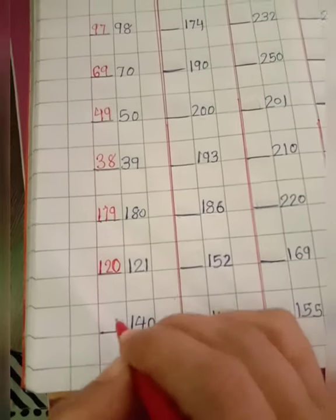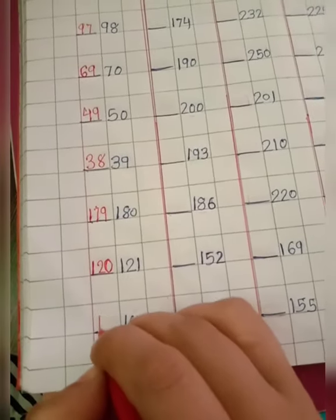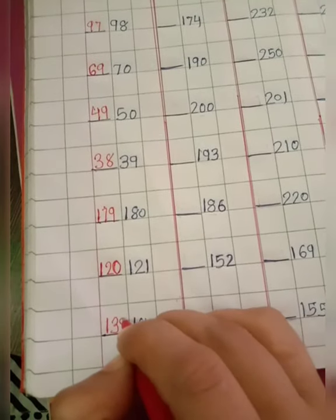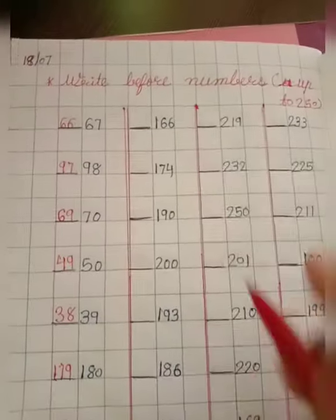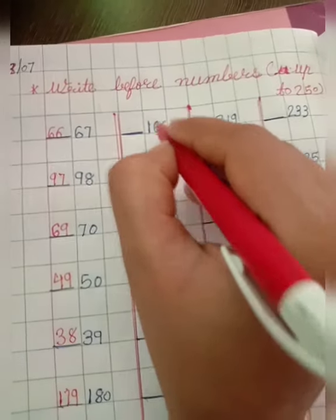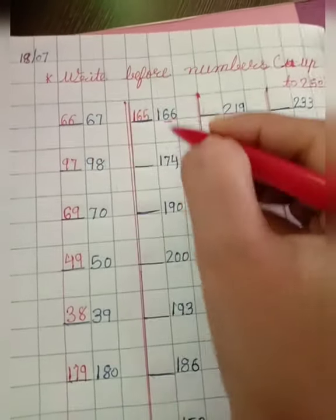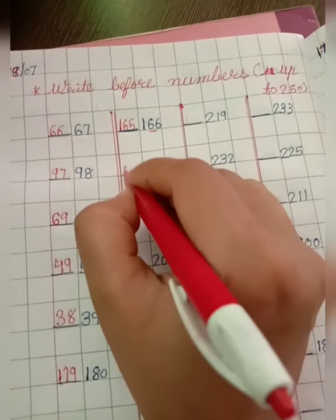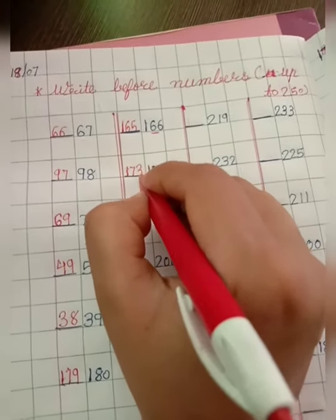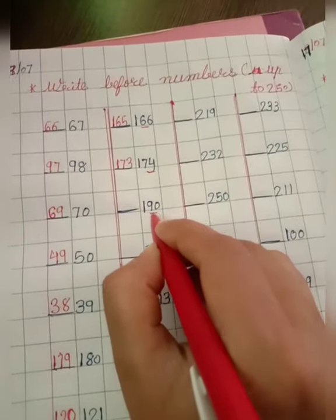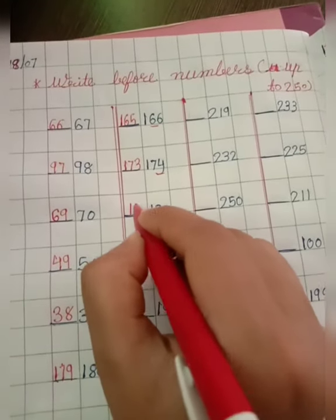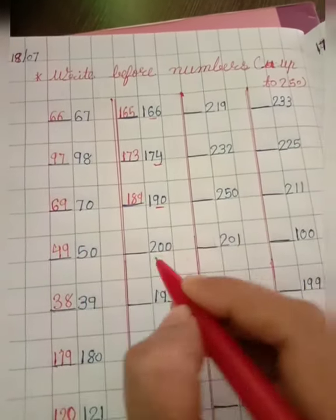40, so 40 before 39. So 139. 66, 66 before 65. So 165. 74, 74 before 73. 90, so 90 before 89. So 189.